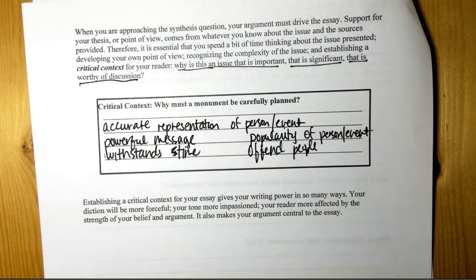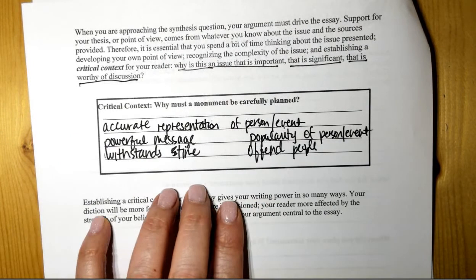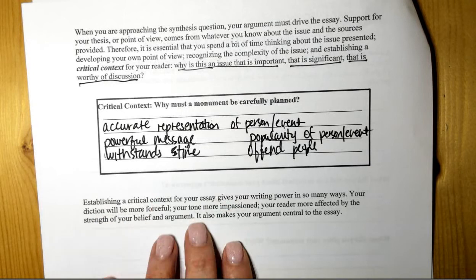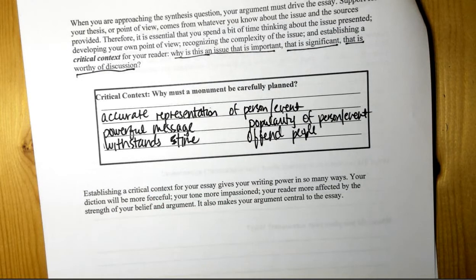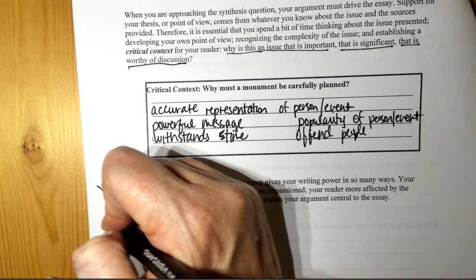So think about this. All of these ideas came about from your process of trying to plan your own monument, right? So look, establishing a critical context for your essay gives your writing power in so many ways. Your diction will be more forceful, your tone more impassioned, your reader more affected by the strength of your belief and argument. It also makes your argument central to the essay. So by doing this, you create your voice for the paper.